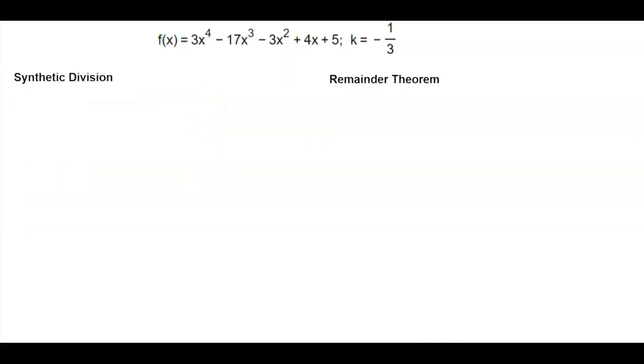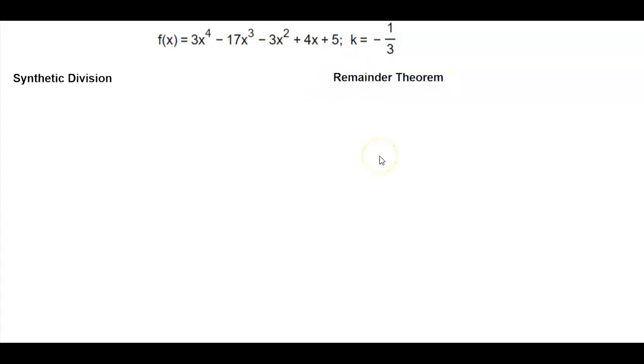We're going to do synthetic division and the remainder theorem since that's what they're asking for. The value of k is equal to negative one-third.